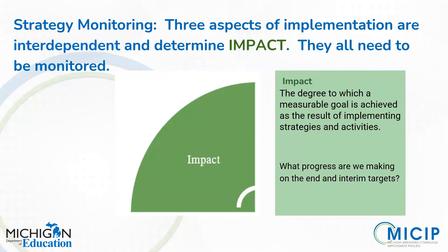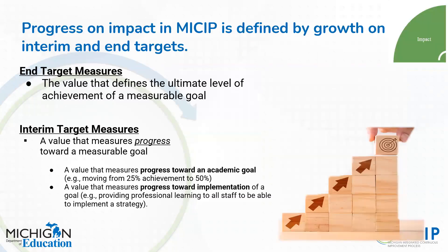All three aspects of implementation impact each other, but then all of them together determine impact. If we're not being successful with implementation, it's not likely we're going to achieve the impact we want. The question around impact in terms of MICIP is really quite simple: what progress are we making on our end and interim targets? The end targets are pretty much defined by the ultimate achievement of our goal, while the interim targets are benchmarks along the way that lead to hopefully eventually achieving our end target.